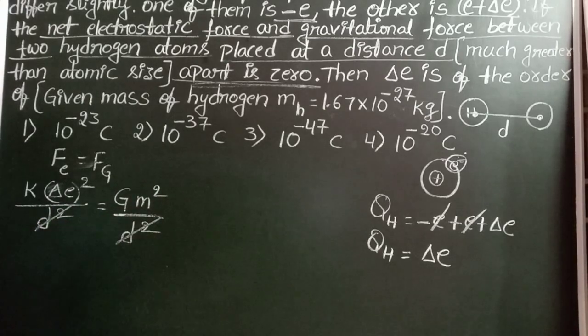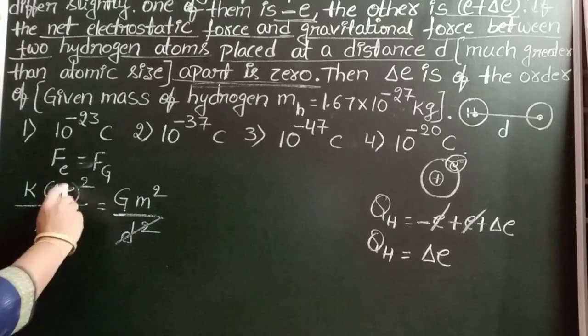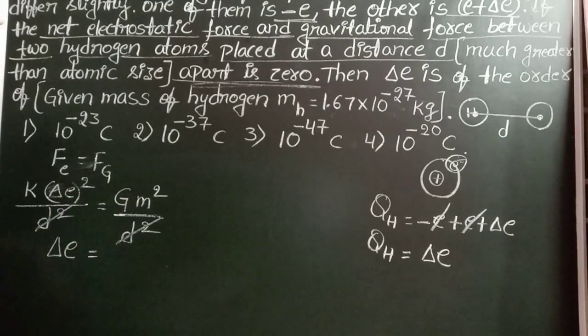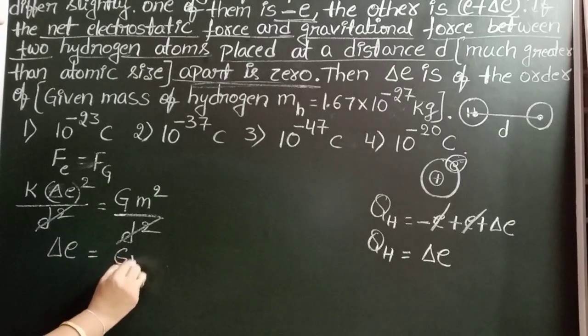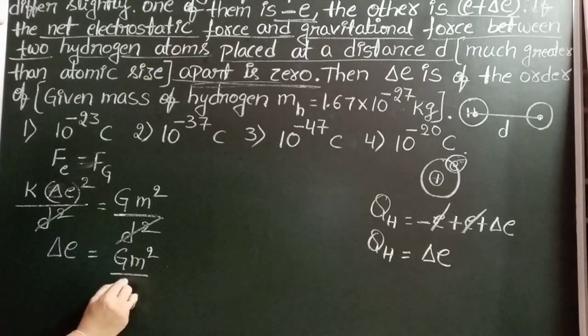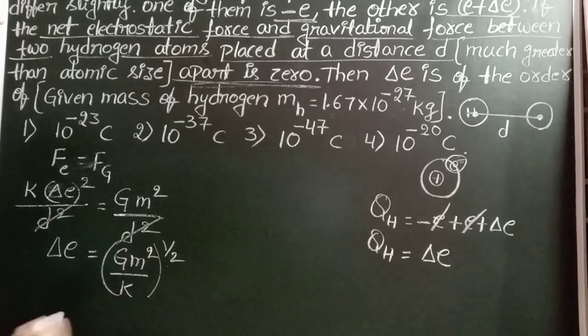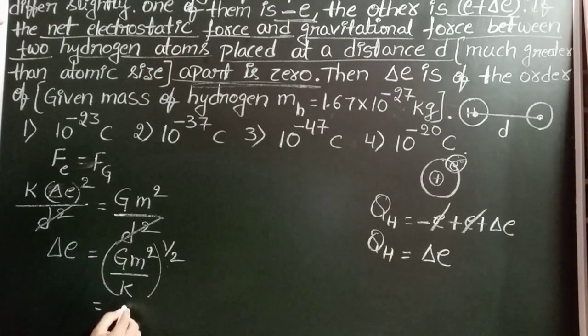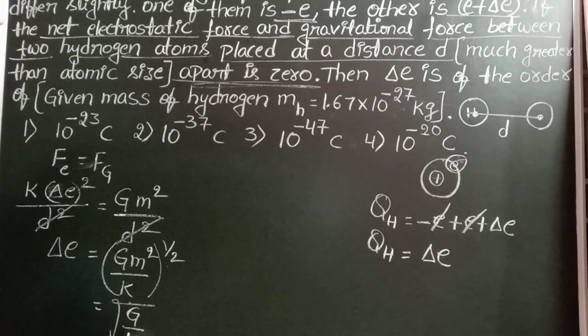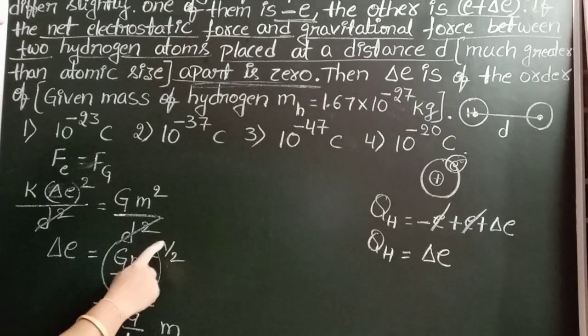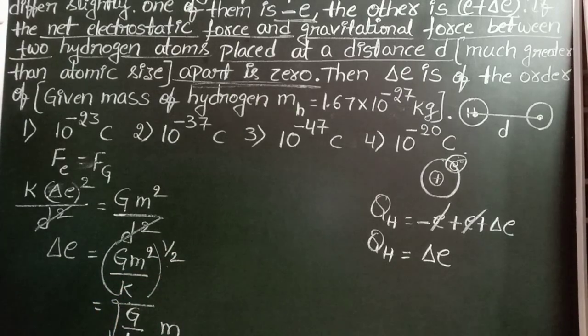From this we want the charge, so delta E equals G M square by K whole power 1 by 2. That equals square root of G by K into M because M square whole power 1 by 2 becomes M. Now substitute the values and simplify.